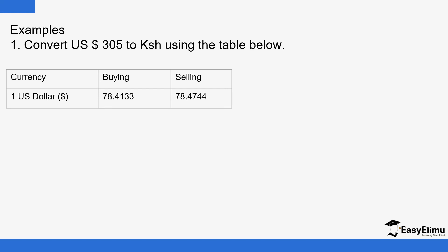Now, knowing the difference — when to use the buying column and when to use the selling column — is key. It is the bank that deals in the business. They either buy foreign currencies from you if you have them and want Kenyan money, or they sell the foreign currencies to you if you need them. If you have the foreign currency, they buy from you.